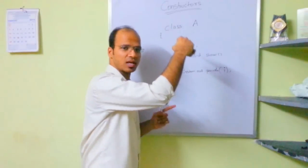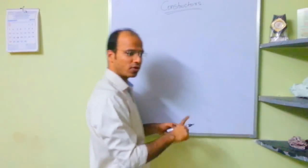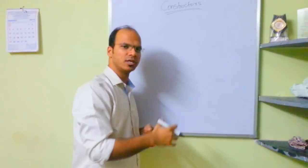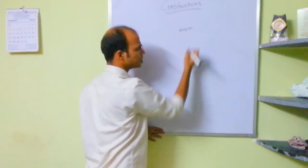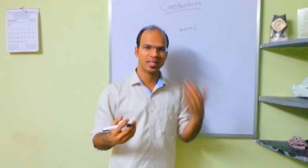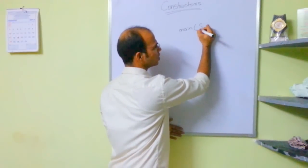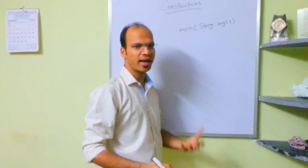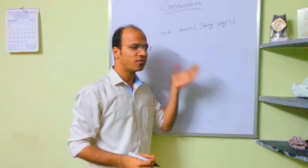Everything I'm writing on this board will be inside this class. So we have a main method. A method will do something for you, and methods expect you to provide something as parameters — so it's String args, which takes a String array. Methods return something, so we have void. Now many people ask me why the main function is static.